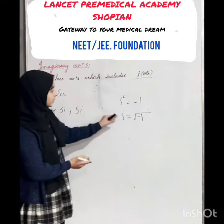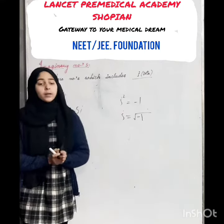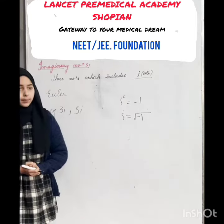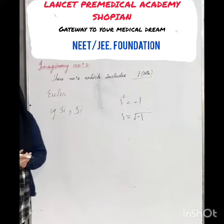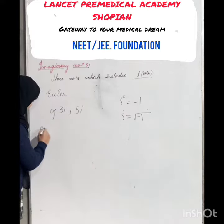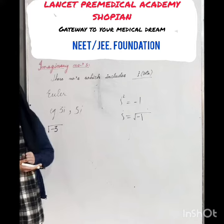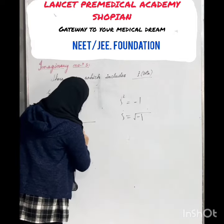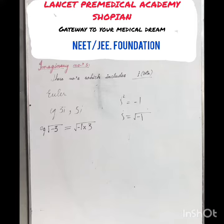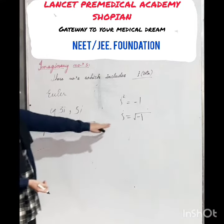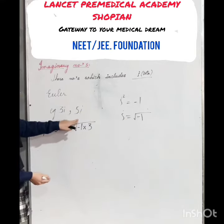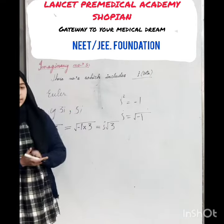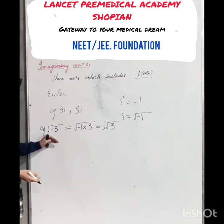Euler said that any number which contains iota is called an imaginary number. So we also call square root of minus 2 an imaginary number. For example, square root of minus 3 is also an imaginary number, because it equals square root of minus 1 into square root of 3, which is iota times root 3. So these numbers are all imaginary numbers.